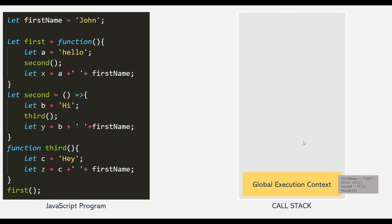When all the functions are done executing, the JavaScript engine will basically wait for callback functions to arrive so that they can be executed. And the program will stay in this state forever until the web application is closed — that is, when the browser in which we are rendering the web page is closed. Once the program is exited, the global execution context is also removed from the call stack. So this is how a JavaScript program gets executed by the JavaScript engine in the call stack — it uses execution context in order to execute a piece of JavaScript code.